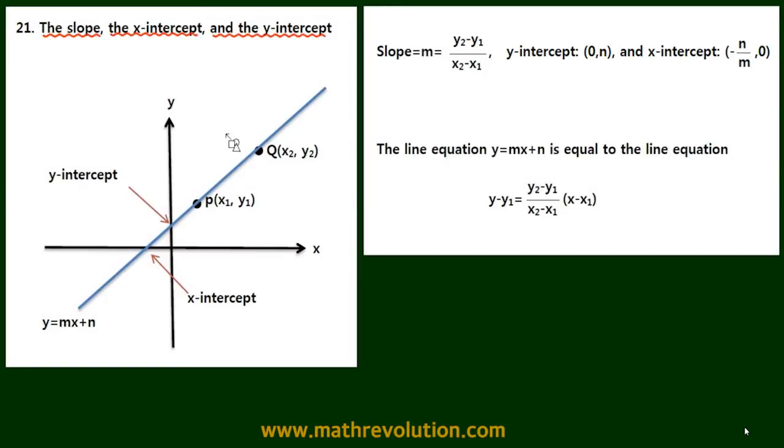The y-intercept is the point that crosses the y-axis, the x-intercept is the point that crosses the x-axis, and if a line crosses through point P and Q, the line equation is y equals mx plus n.